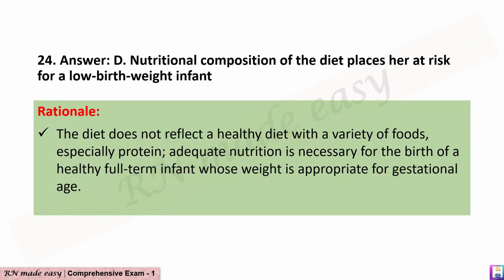The correct answer is D: Nutritional composition of the diet places her at risk for a low birth weight infant. Rationale: The diet does not reflect a healthy diet with a variety of foods, especially protein. Adequate nutrition is necessary for the birth of a healthy full-term infant whose weight is appropriate for gestational age.